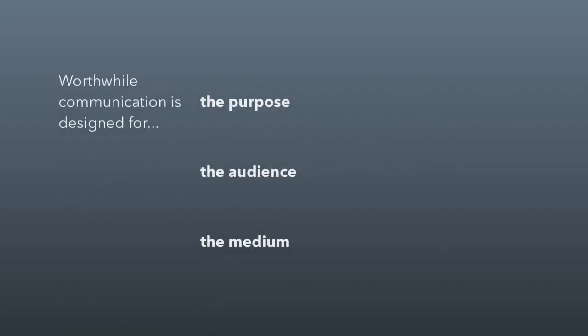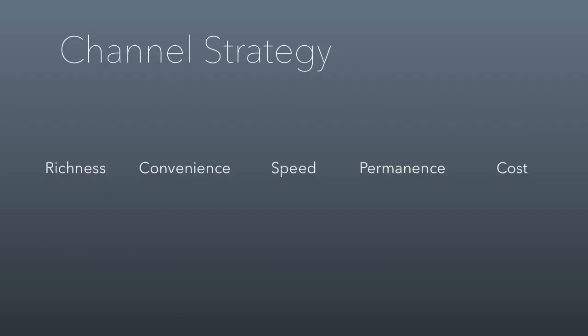Another part of a well-designed message is a channel strategy. Worthwhile communication is designed for purpose, audience, and medium. The channel part of a strategy is all about the medium. The book illustrates five different channels — or better put, these are five attributes of every channel. A channel is the medium essentially, and these are five attributes of every channel. We're going to step through them quickly just to make some observations.